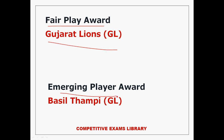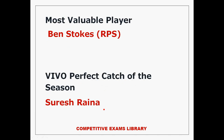The Emerging Player Award was won by Basil Thampi of Gujarat Lions. The Most Valuable Player award was won by Ben Stokes of the Rising Pune Supergiant team.